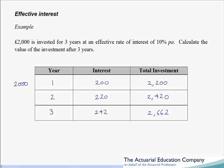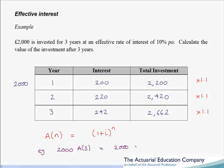Once again it would be good to get from our original investment of £2000 to our final answer of £2662 in one go. We do that using the accumulation factor. The accumulation factor for effective interest is (1 + i)^n. The reason is that each year we multiply by 1.1 — that is 100% plus 10% interest. Confirming numerically: 2000 times (1 + i)^3 is 2000 times 1.1 cubed, giving us our final answer of £2662.